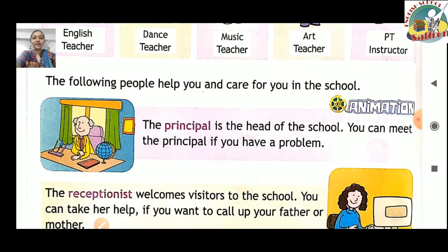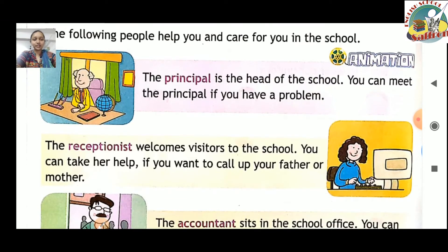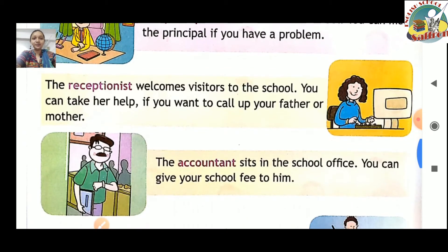The following people help you and care for you in the school. First, the principal — the principal is the head of the school. Jo principal hote hain, unki upar saari responsibility hoti hai school ki. You can meet the principal if you have a problem — aapko school mein koi problem ho toh aapko principal se milna hai. Second, the receptionist — the receptionist welcomes visitors to the school.